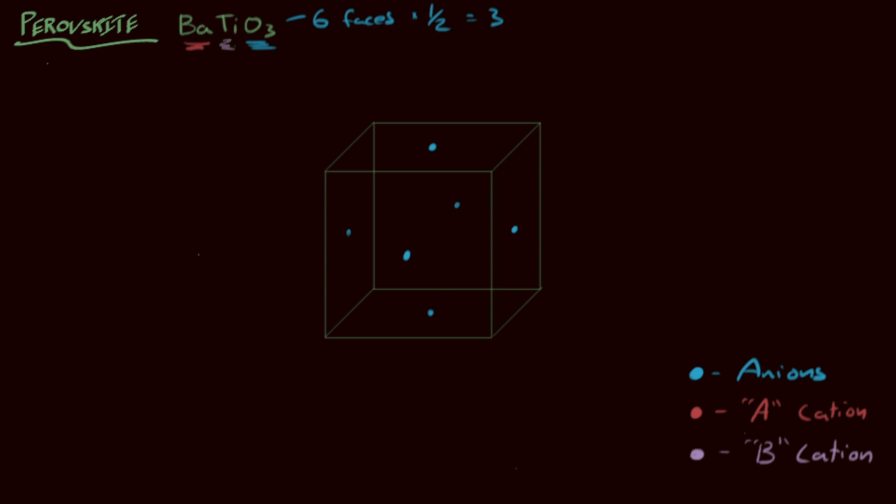What about the A cations? The A cations are going to go into the corner positions of the cube. There we go, we've occupied each of the corner positions, and we've got eight corners on a cube times one-eighth of a sphere inside the cube, so that's one, which is fantastic. Our stoichiometry is working out.